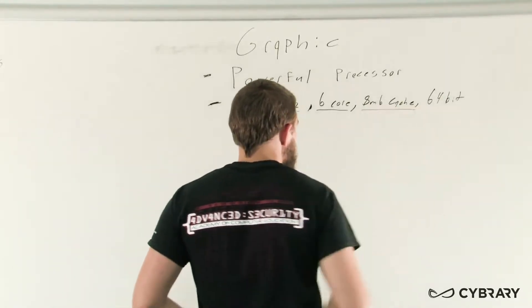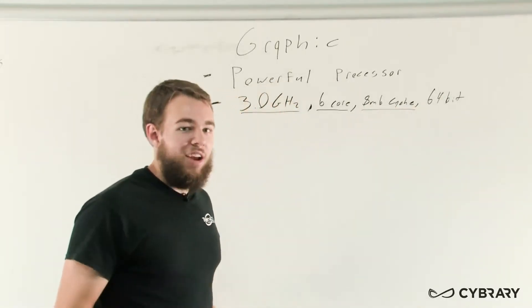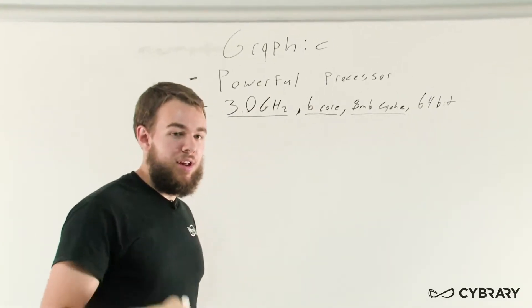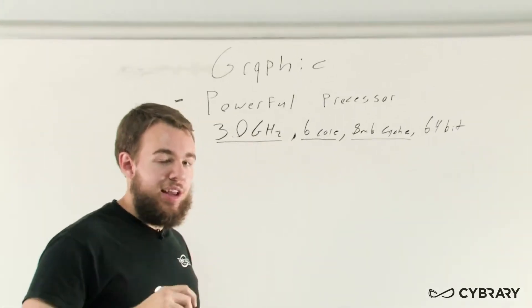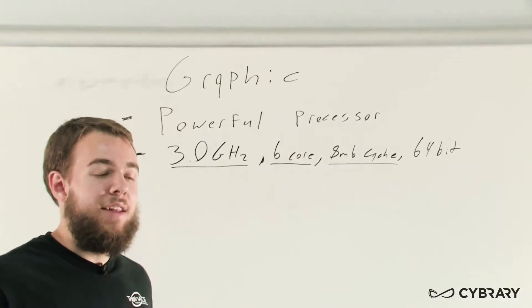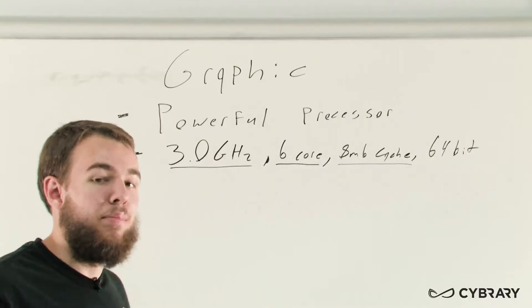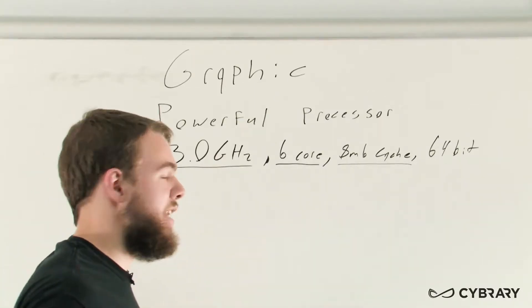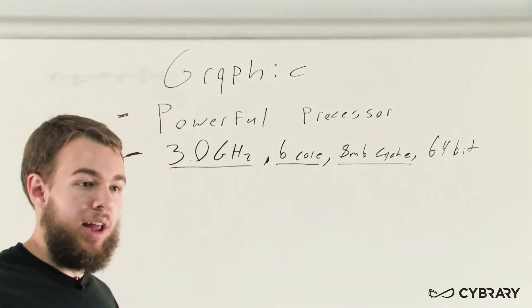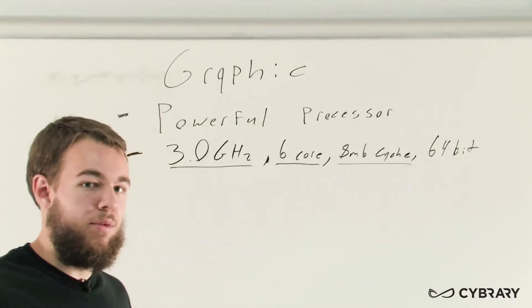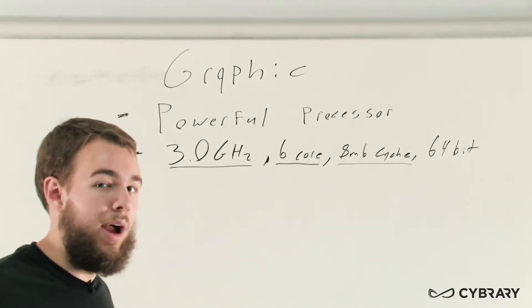And our eight megabytes total cache - we remember that our cache is where our computer CPU can actually temporarily store memory and it can quickly retrieve that memory a lot faster than going all the way out to our RAM to retrieve it. It can retrieve that very quickly rather than having to go all the way out to our memory.